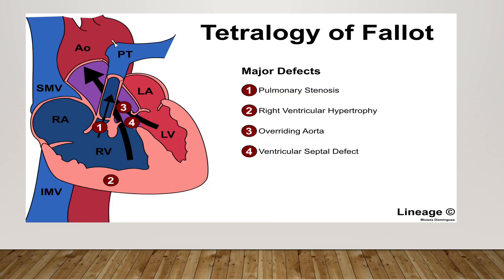Tetralogy of Fallot is the most common form of cyanotic heart lesion. It is a combination of ventricular septal defect, pulmonary valve stenosis, right ventricular hypertrophy, and overriding of the aorta. After surgical correction, patients tolerate pregnancy well. Surgically uncorrected patients are at increased risk; complications like bacterial endocarditis, brain abscess, and cerebral embolisms are more common. Maternal mortality is 5 to 10% and perinatal mortality is 30 to 40%. IUGR is common. Systemic hypotension is dangerous and may lead to death. Epidural or spinal anesthesia is avoided and pregnancy is discouraged in uncorrected cases.